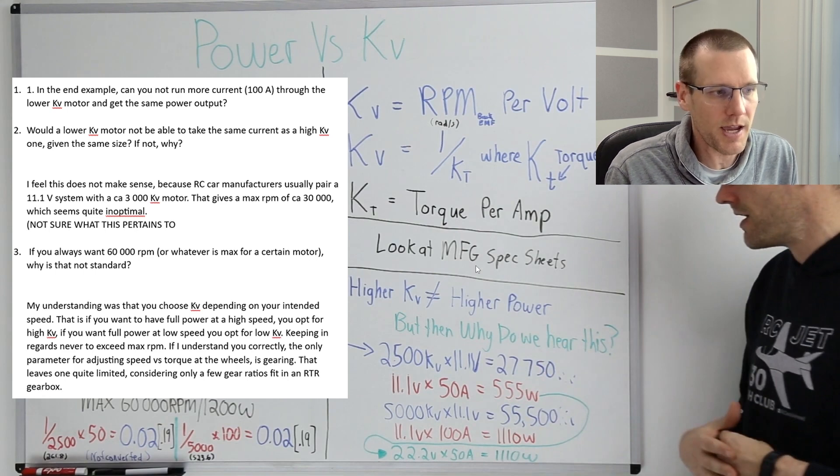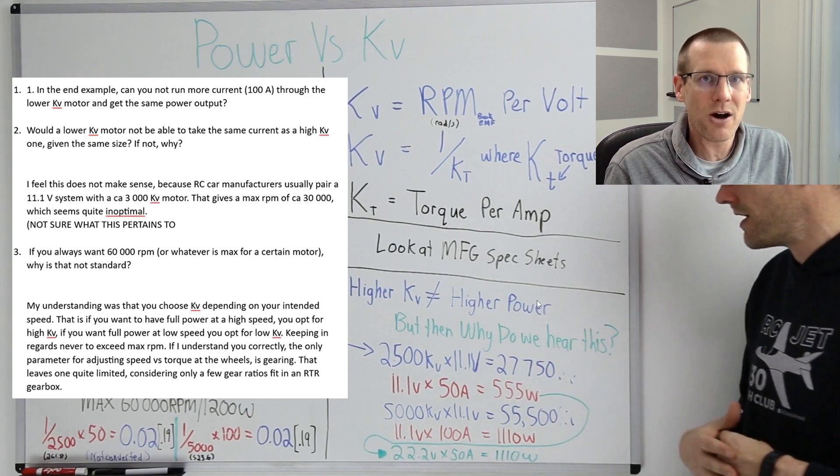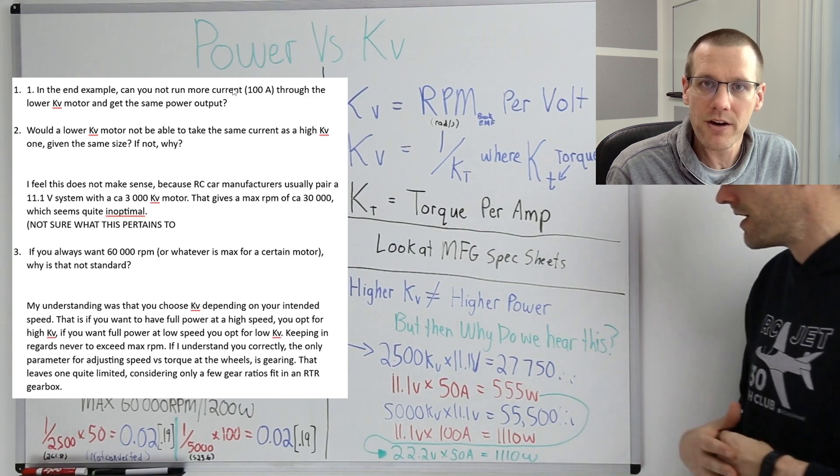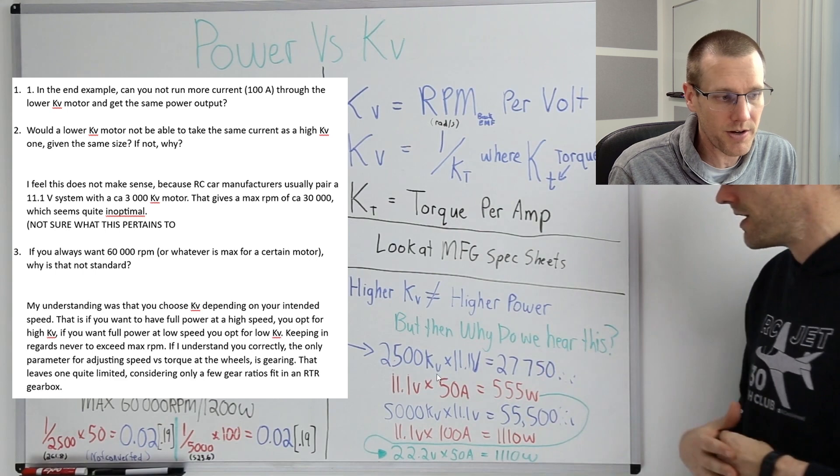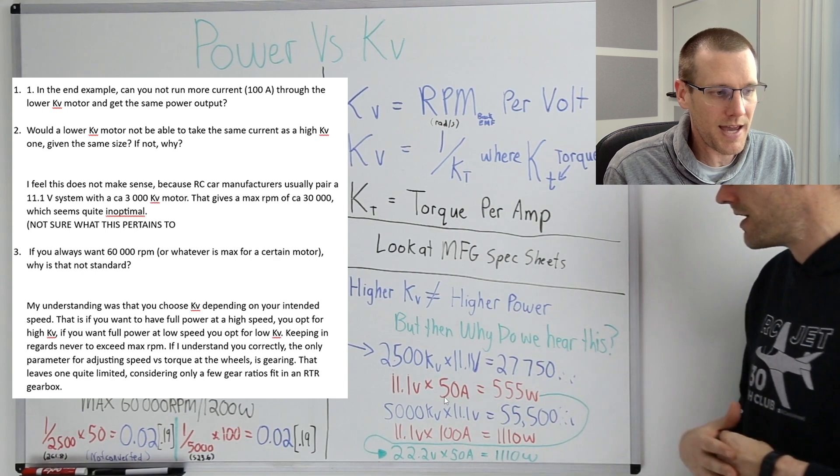What I was trying to do here is look at manufacturer spec sheets to be able to relate the question that was asked and the answer that I was coming up with. Higher KV does not necessarily equal higher power. And this is key, but we have to understand how this is actually true. And that's what I go through in this example. But we're going to go and answer this question of the hundred amps on the lower KV motor. So let's see what's happening with that lower KV motor. We have twenty five hundred KV motor at eleven point one volts gives us just shy of thirty thousand RPM.